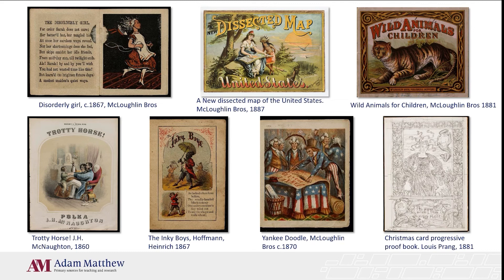Examples on this slide include The Disorderly Girl, who is morally judged for her messy, noisy, and immodest ways — though she does look like she's having quite a lot of fun in that picture in the top right. Other examples include The Inky Boys by Heinrich Hoffmann, which is a morality tale that has been subject to multiple scholarly interpretations, and Yankee Doodle, an illustrated interpretation of the patriotic song.